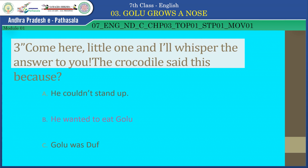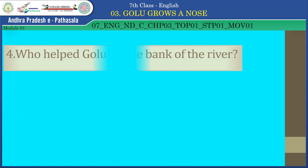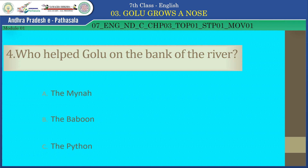Who helped Golu on the bank of the river? A. The myna, B. The baboon, C. The python. Yes, children, the answer is C — the python. Well done.